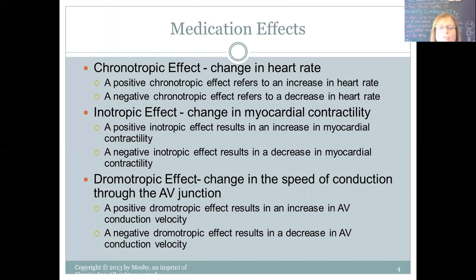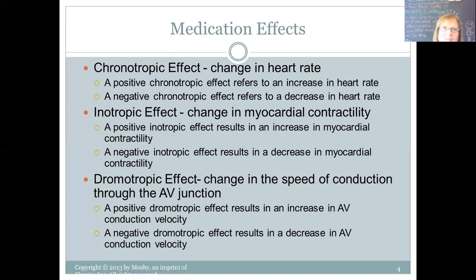A dromotropic effect changes the speed of conduction, particularly through the AV junction — that place where the impulse pauses and gathers steam. Some medications can speed that up; other conditions and electrolyte changes can affect it as well. A positive dromotropic effect increases the velocity of conduction through the AV node; a negative dromotropic effect decreases conduction through the AV node. Hope that's helpful — see you in class.